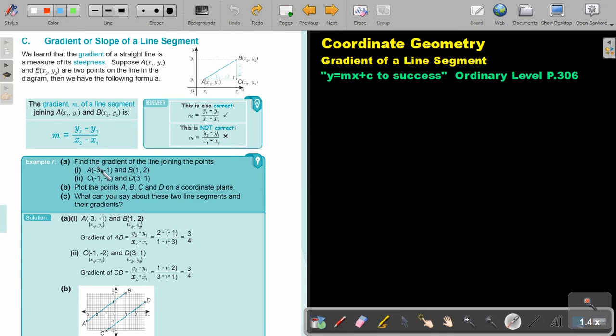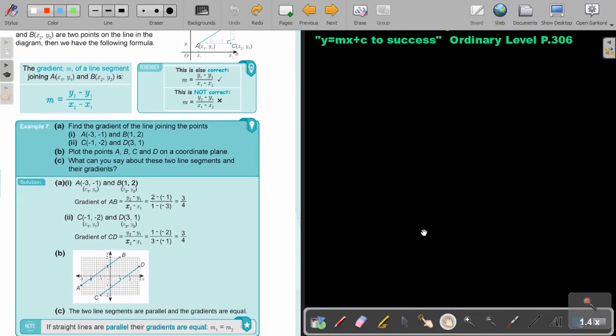Let's look at an example. Find the gradient of the line joining the points A, B, C, D. Plot the points on a coordinate plane. What can you say about these two line segments and their gradients? Let's just start. So first we're going to find the gradients. So if this is A and this is B, so this is y2 minus y1, x2 minus x1. It's always good to first number your points. Then it's very easy with the substitution and you don't make mistakes. So it's three quarters.